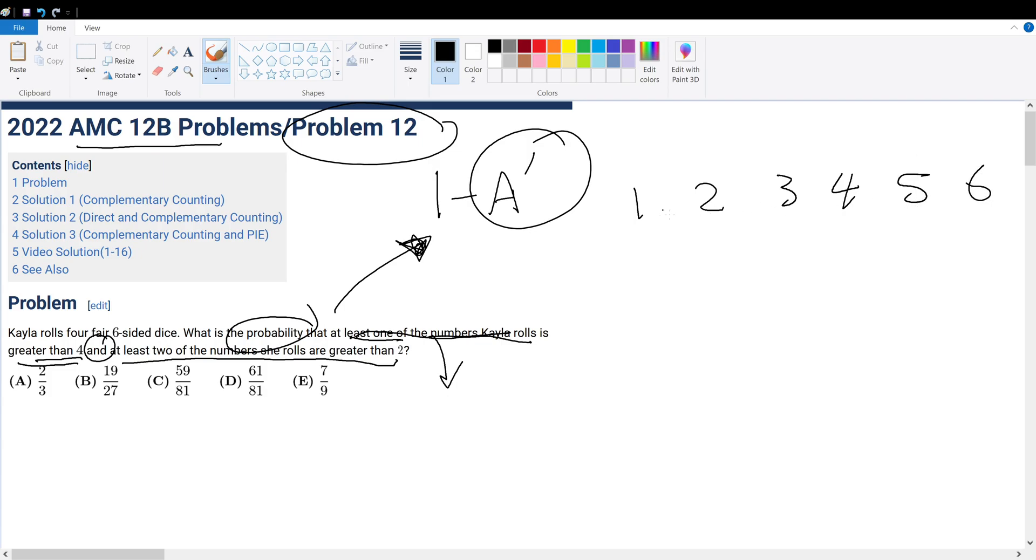So, from 1 to 6 on a die, numbers that are less than or equal to 4 are 1 to 4, which is 4 over 6, which is 2 thirds.